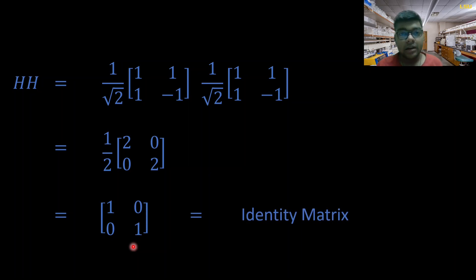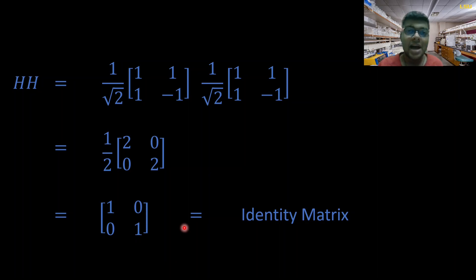When two Hadamard gates come together, their combined effect is just like an identity matrix. As you know from high school, the identity matrix does not apply any effect on any particular matrix or vector. Since our quantum state is also a vector, applying an identity matrix leaves it unaffected. That's why applying two Hadamard gates consecutively returns you to the state where you started. There are more properties about quantum gates involved here, which I'll cover after we've completed all the single-qubit gates.